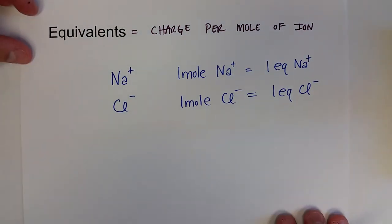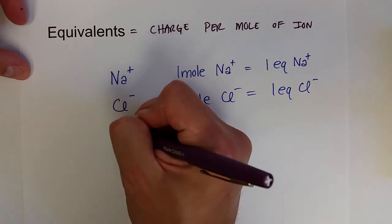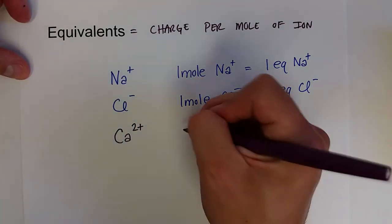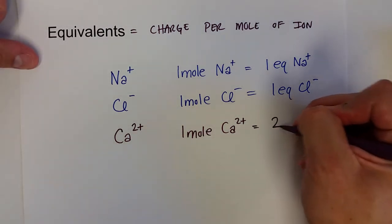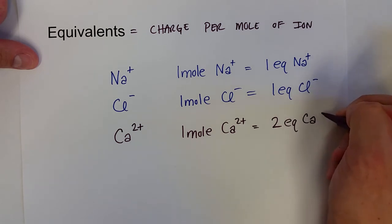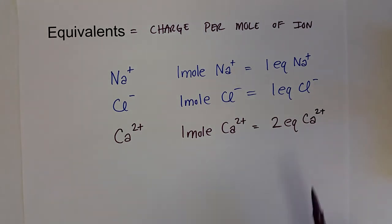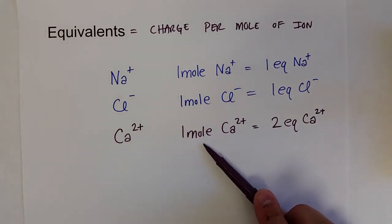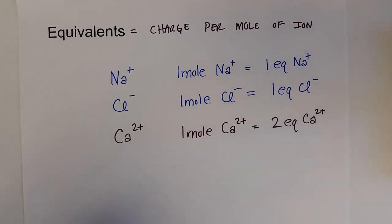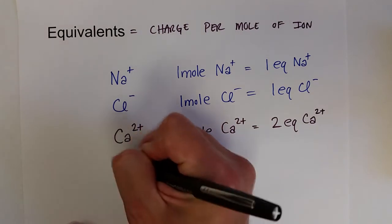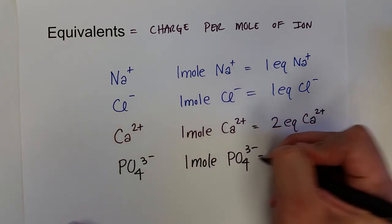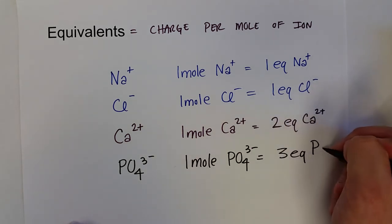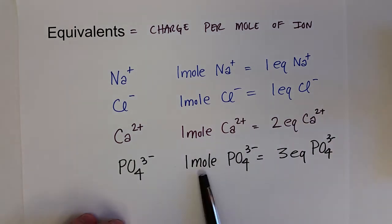What changes is when we have ions with a multiple charge. So for instance, calcium. Calcium is a two plus ion. And so one mole of calcium brings double the charge of sodium. And so it is equal to two equivalents of calcium. So if you need the same charge for calcium or sodium, you can either use one mole of sodium, or 0.5 moles of calcium would equal the same amount of equivalents as sodium. The same goes true for higher charge and even anions. So one phosphate PO4 3 minus, one mole of phosphate is equal to three equivalents of phosphate. And you can use these as conversion factors.